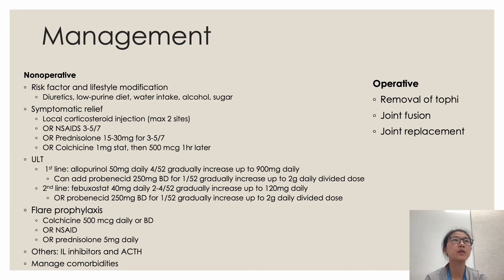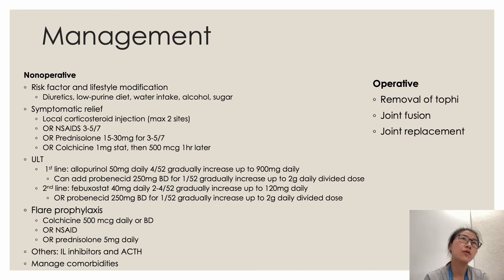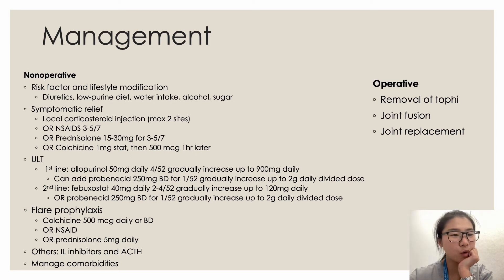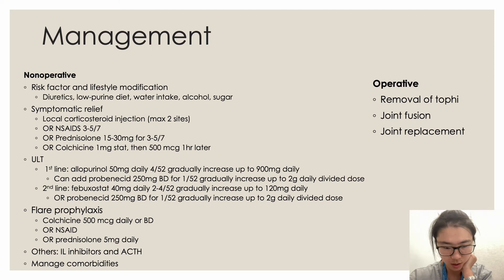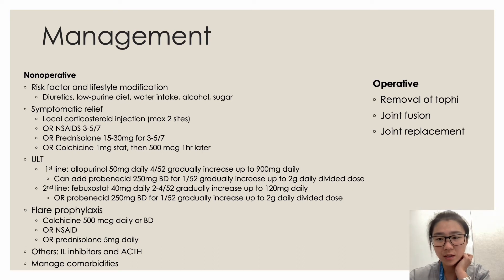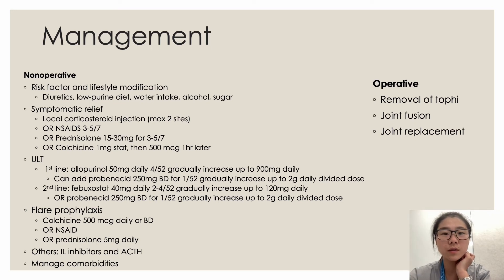Risk factor management is also important: reviewing medications for diuretics such as furosemide, which can trigger events; modifying diet by avoiding red meat and shellfish; increasing water intake; avoiding alcohol and sugary drinks; and managing comorbidities including diabetes, hypertension, CKD, and ischemic heart disease to alter the metabolic state. In cases where arthritic changes or severe joint destruction occur related to gout, operative management — including tophus removal, joint fusion, or joint replacement — can be considered.